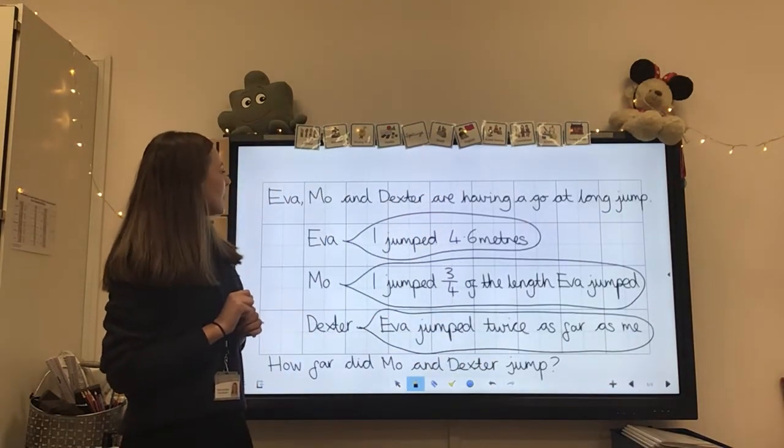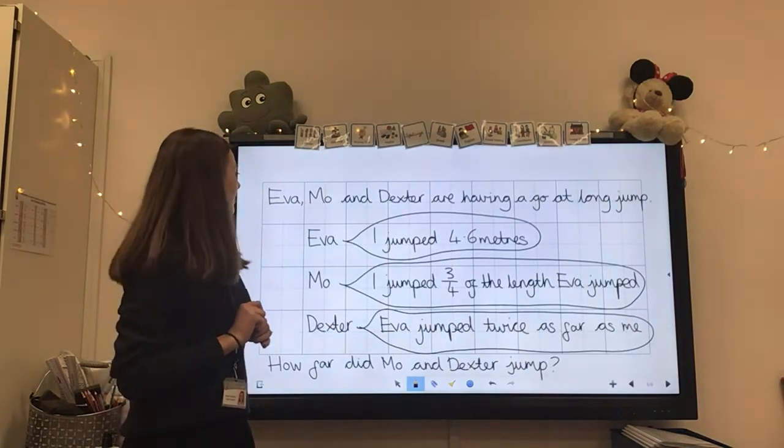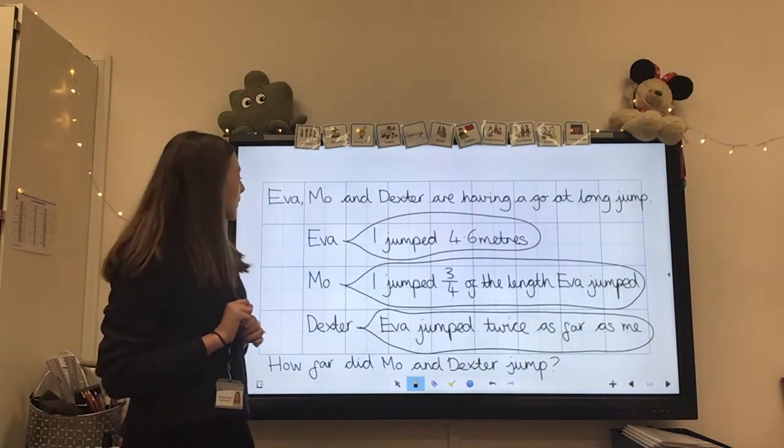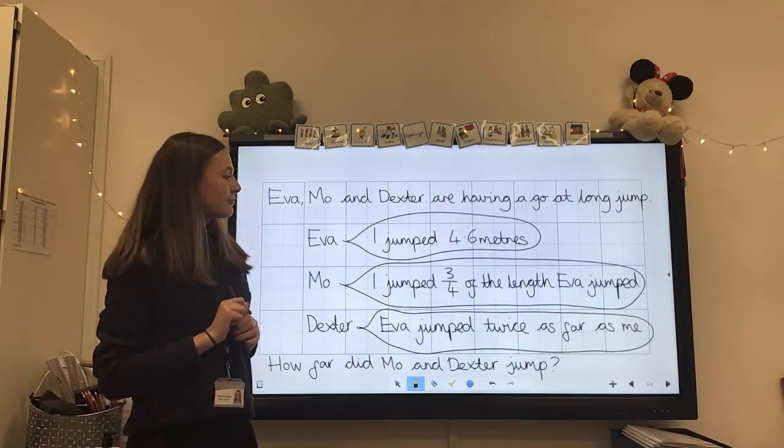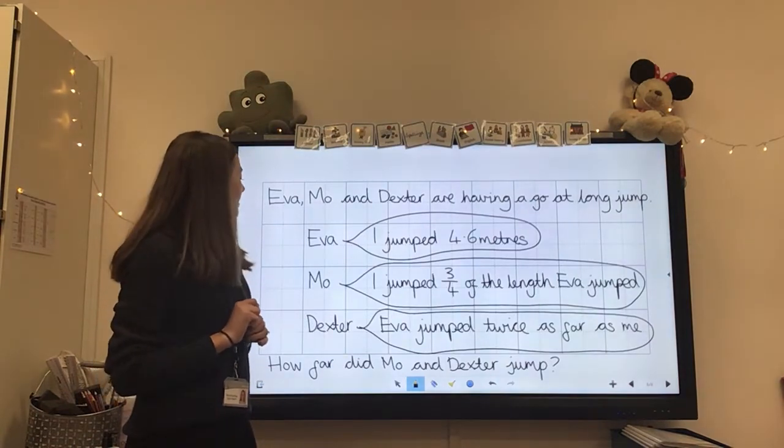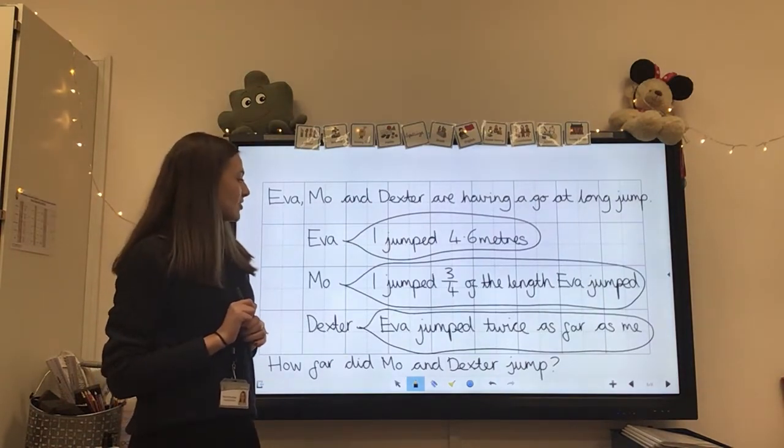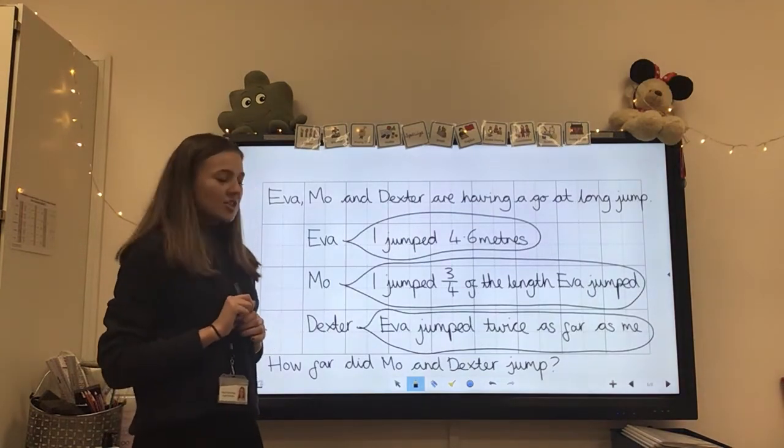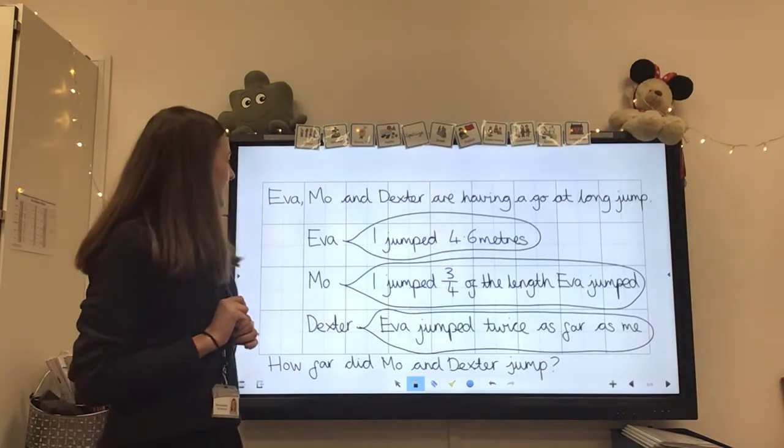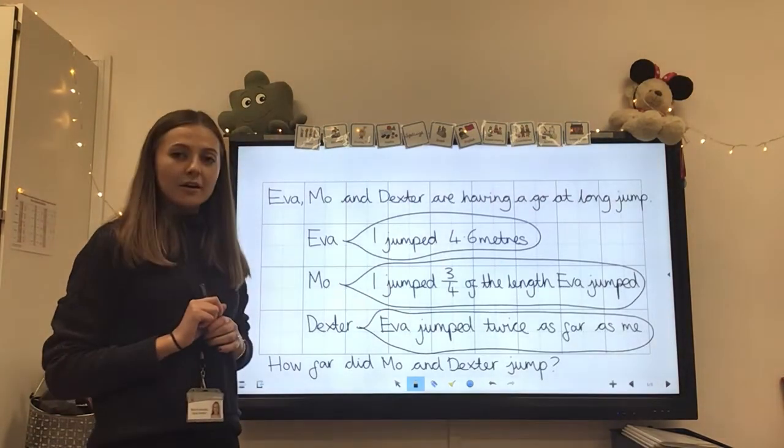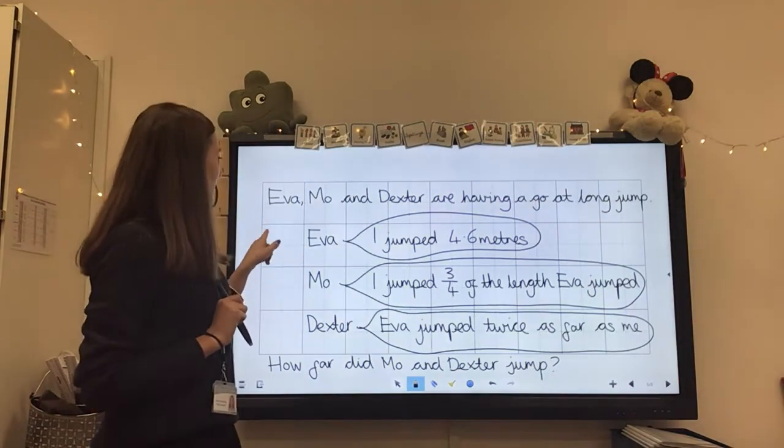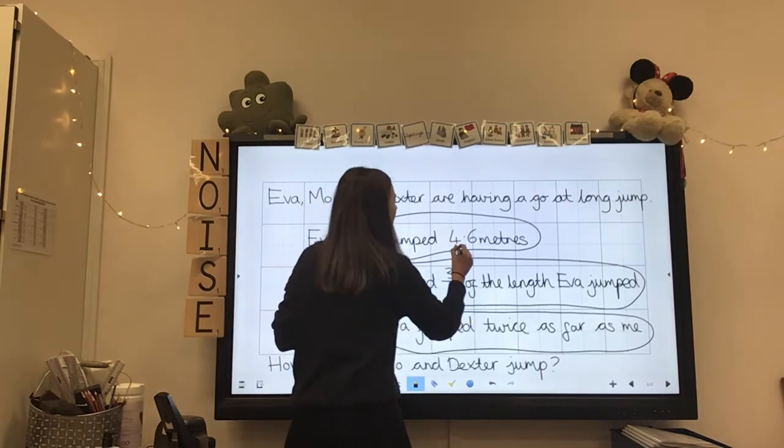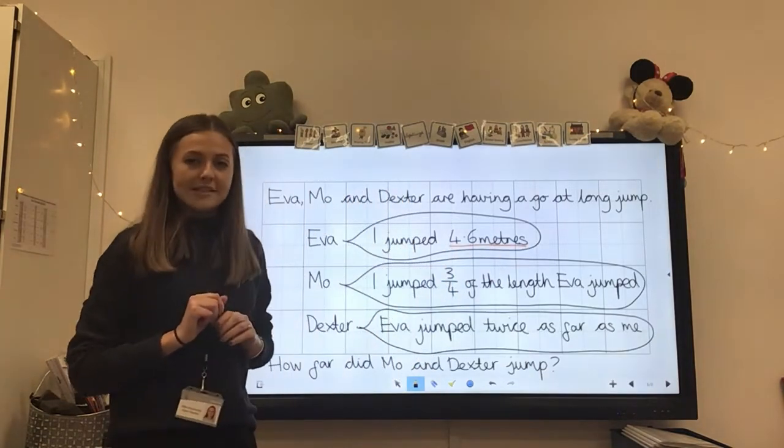So Eva, Mo and Dexter are having a go at long jump. Eva says, I jumped 4.6 metres. Mo said, I jumped three quarters the length that Eva jumped. Dexter said, Eva jumped twice as far as me. How far did Mo and Dexter jump? Okay, so in this problem, we need to take the facts that we know, which is we know that Eva jumped 4.6 metres.